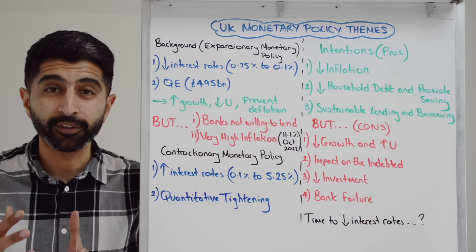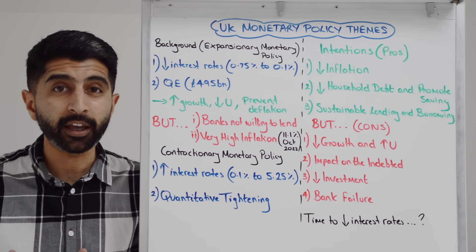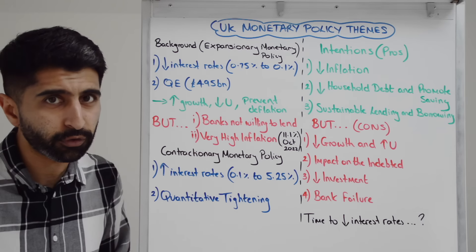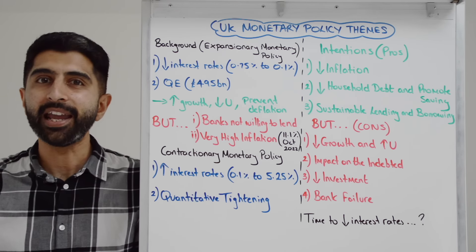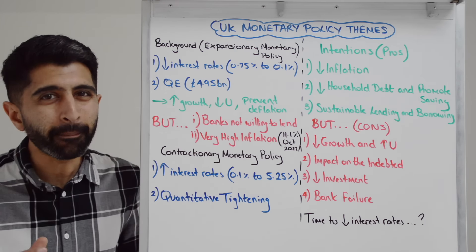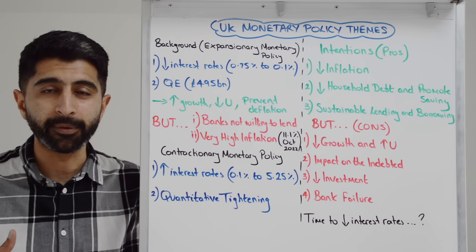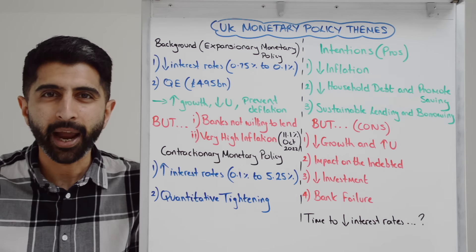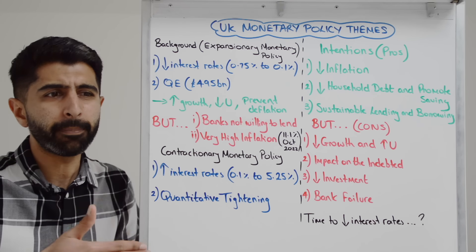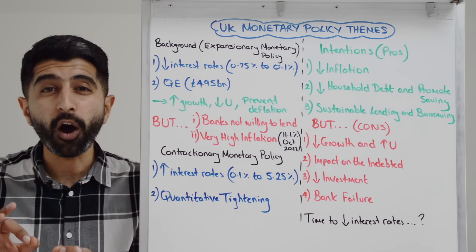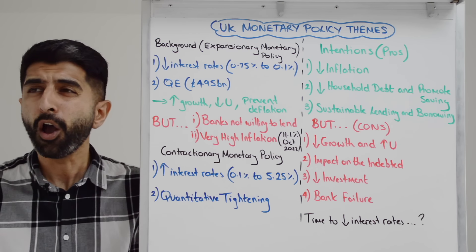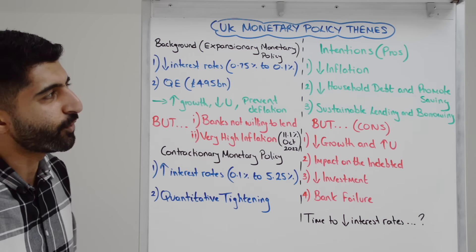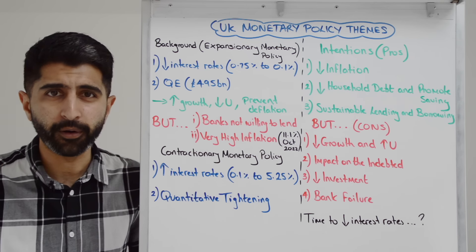COVID was a big health crisis, but it was a very deep economic crisis as well. In the UK, our worst recession in over 300 years. The Bank of England and the Monetary Policy Committee responded with expansionary monetary policy — they cut interest rates all the way down to 0.1%, the lowest rate in the history of the Bank of England. Rates didn't fall that much because they were already very low at 0.75%, so they were forced to also use quantitative easing to get AD up even further and promote recovery. £495 billion pounds worth of QE money was pumped into the UK economy — an extraordinarily eye-watering sum.